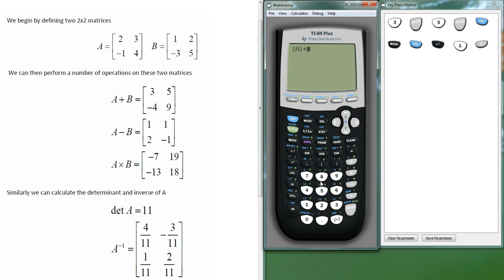And then plus, similar thing, 2nd matrix, and to select that one, we can either move down, or we can just select 2. So we've got matrix A plus matrix B. Press enter, and they give us the answer, which we can see matches up what we've got over here.